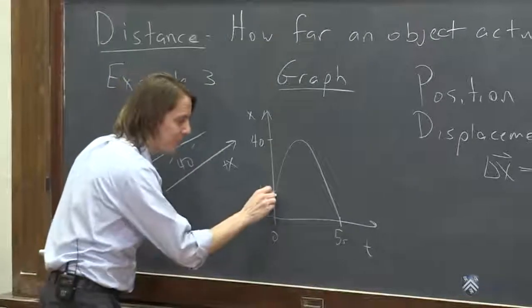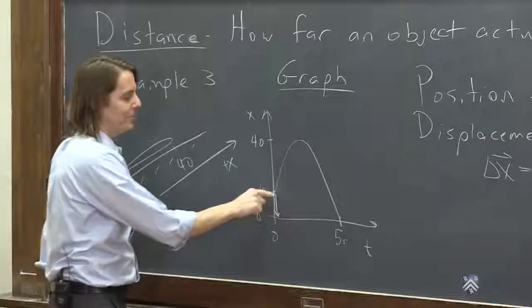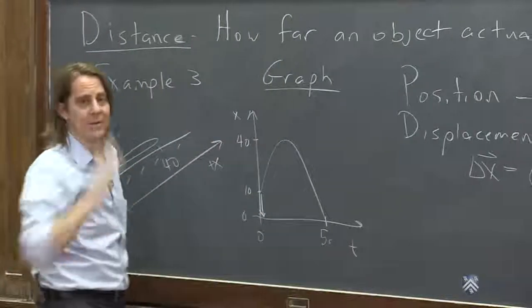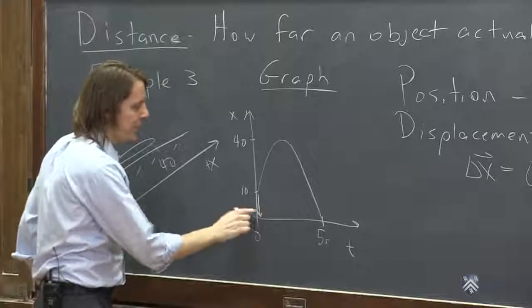If I were to draw that displacement vector, it would look like this. There it is. The displacement from initial to final is negative 10. All this other crazy stuff happened, but it doesn't matter. Displacement just cares about initial and final.